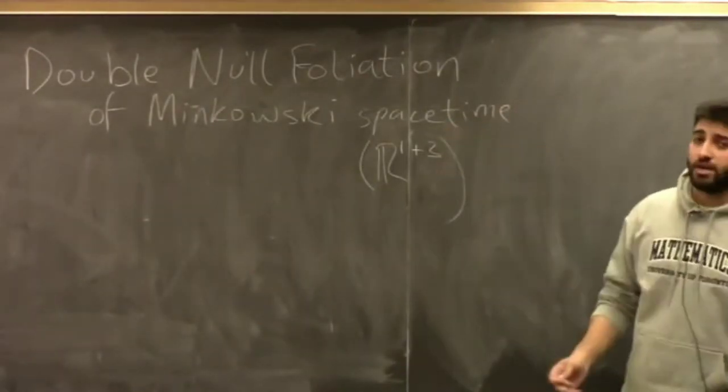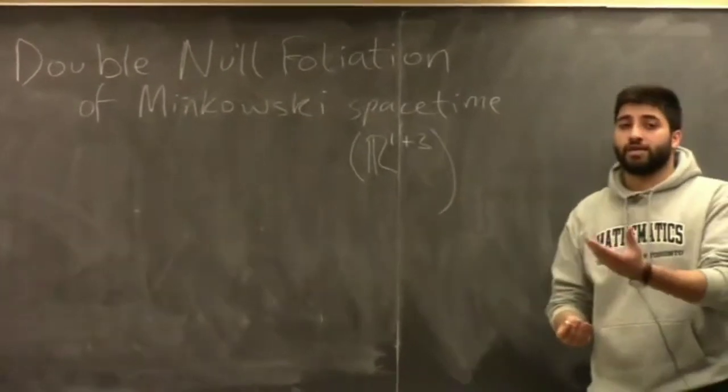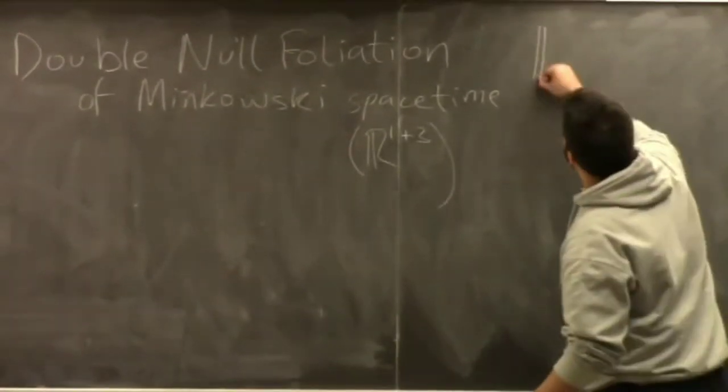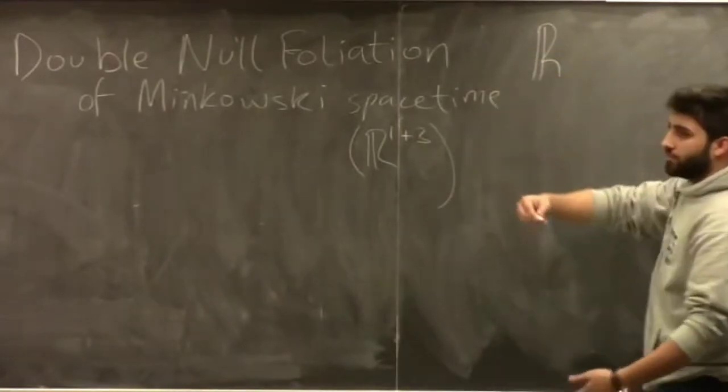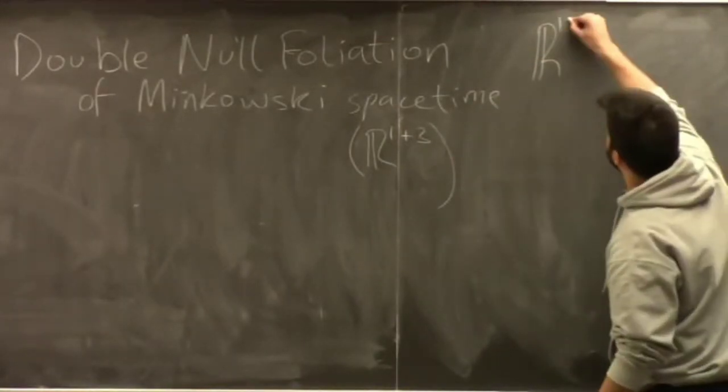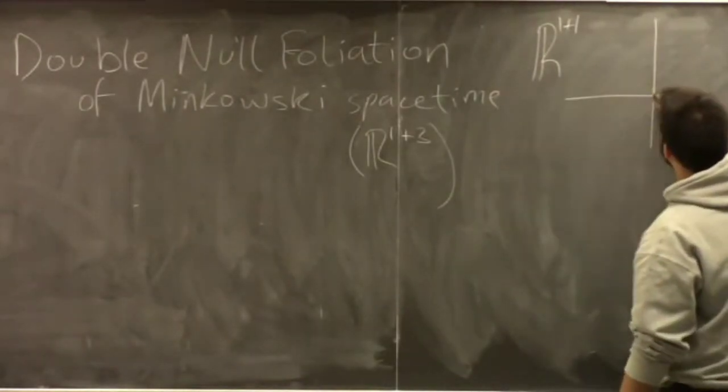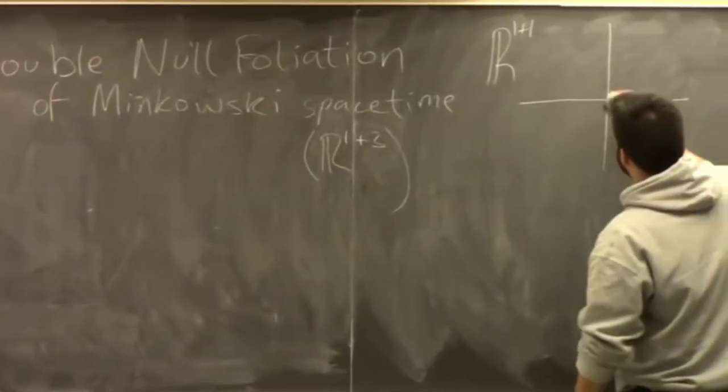But what foliation describes are the families of future directed and past directed cones. So first, I'll go into the simple case, what we have been working in class, which is simple two-dimensional space. So first, I'll draw the regular spacetime.